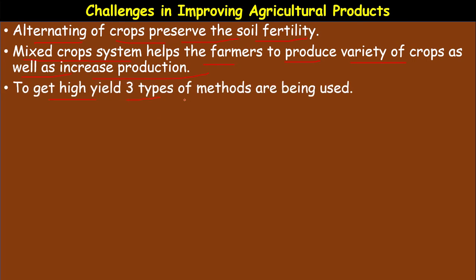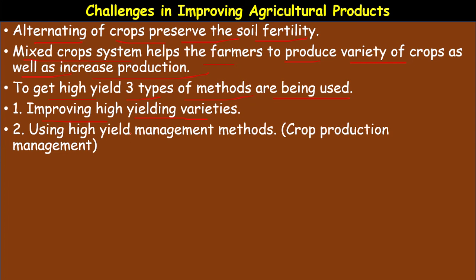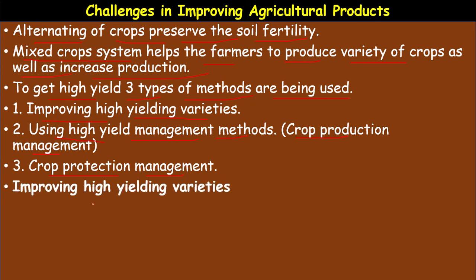To get a high yield, three types of methods are used: first, improving high yielding varieties, also called crop variety improvement; second, using high yield management methods, also called crop production improvement or crop production management; and third, crop protection management. Crop variety improvement deals with the selection and cultivation of crops with favorable characteristics for improved food production to sustain the large population.